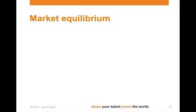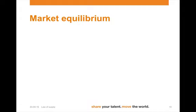This is the equation for the supply curve. Let's see if we can determine market equilibrium based on two linear equations. On your screen you will find two different examples: quantity demanded equals minus half p plus 145, and quantity supplied equals 2p. In market equilibrium, we know that the quantity demanded equals the quantity supplied.